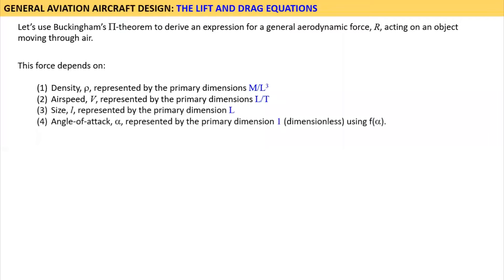The force also depends on the orientation of the object with respect to the oncoming airflow. This is called the angle of attack, denoted by the Greek letter alpha. Angles are presented using the dimensionless radians. Therefore, while a contributor, it does not have a primary dimension. Instead, this contribution must frequently be represented using a special function. Here, we will do so using the function F of alpha. A common form of this function for lift and drag are shown at the end of this video.